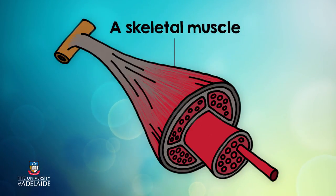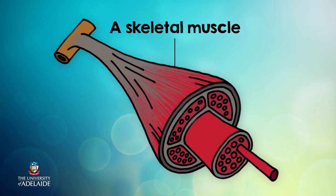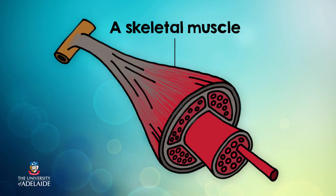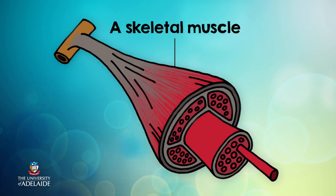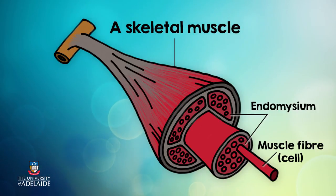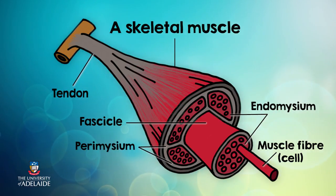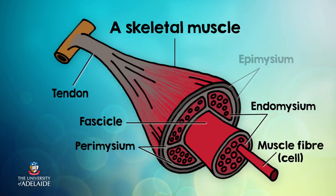So if we now look at an image of the connective tissue sheaths of a skeletal muscle, see if you can identify the features we have just been comparing to the spaghetti fibers and the way they are grouped together and wrapped in the different wrappings: muscle fiber, endomysium, fascicle, perimysium, epimysium.